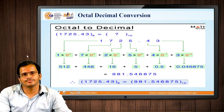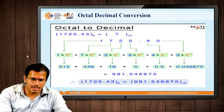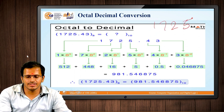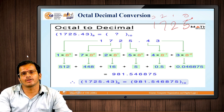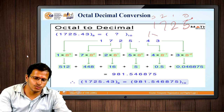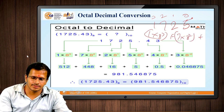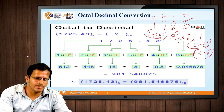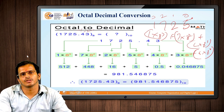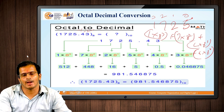For the octal example, if the number is 1725, we assign positions as 0, 1, 2, and 3. Since it is octal, we use a radix of 8. The calculation is: 1 × 8³ + 7 × 8² + 2 × 8¹ + 5 × 8⁰. For digits after the decimal point, they are represented as −1 and −2, so it becomes 4 × 8⁻¹ + 3 × 8⁻².